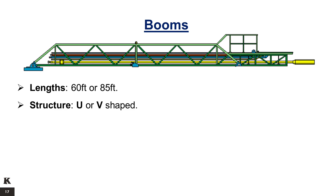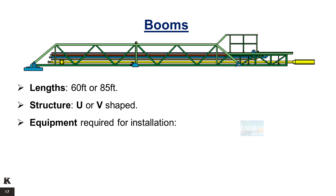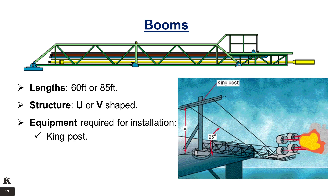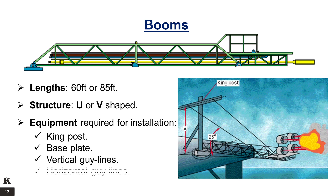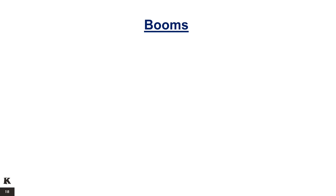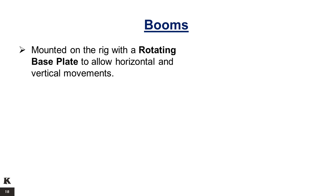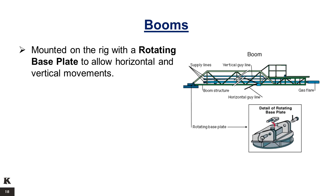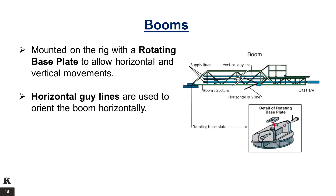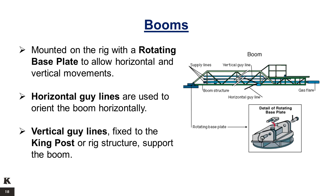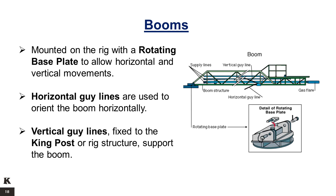For the installation and rig-up of the boom, the following equipment is required: the king post, the base plate, the vertical guy lines, and the horizontal guy lines. The boom is mounted on the rig with a rotating base plate to allow horizontal and vertical movements. Horizontal guy lines are used to orient the boom horizontally. The vertical guy lines, fixed to the king post or to the rig structure, are used to support the boom.